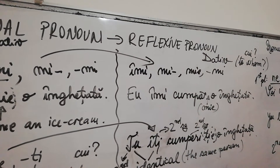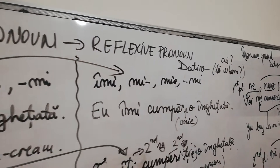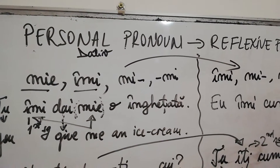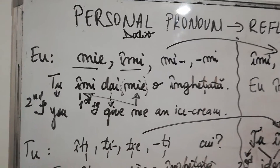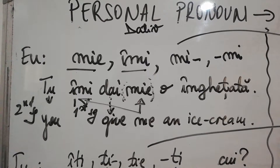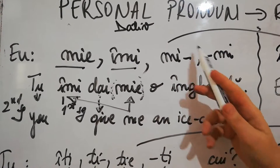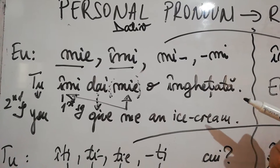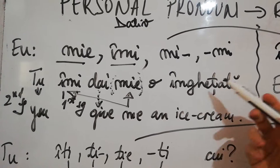This is very important because the pronoun has very different forms when we speak in dative than when we speak in accusative. Now, for the first person singular in dative, as a personal pronoun we have 'mie', 'îmi', 'mi'. These are short forms when we need to link the words with another one.